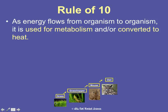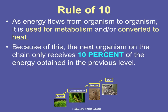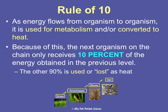Now, the rule of 10. As energy flows from organism to organism, it's being used for the metabolism of an organism or converted to heat. Because of this, the next organism on the chain only gets 10% of the energy from the previous level — the other 90% is used or lost as heat. Energy can never be created or destroyed, only transferred, but it changes form. So if grass has 100% of its energy available, the grasshopper only gets 10% because 90% is used by the grass or lost as heat. Then the mouse only gets 10% of the grasshopper's energy.